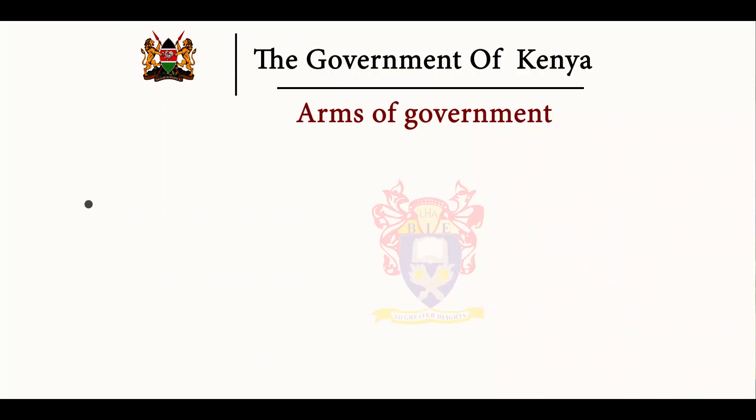The Government of Kenya is one of the topics tested at KCPE frequently, so candidates must make sure that they revise very well. The Government of Kenya has three branches or arms of government. The most powerful arm is the legislature, followed by the executive, then the judiciary.